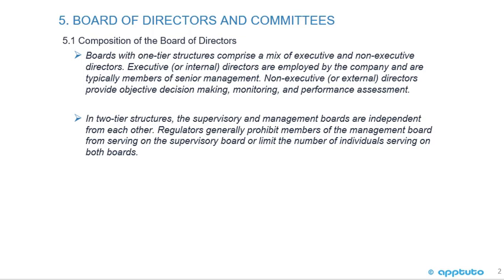In two-tier structures, the supervisory and management boards are independent from each other. Regulators generally prohibit members of the management board from serving on the supervisory board, or limit the number of individuals serving on both boards.